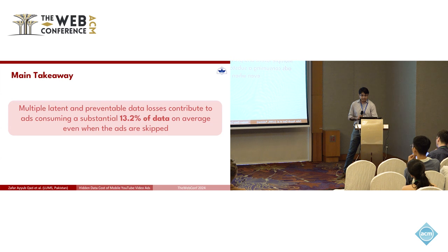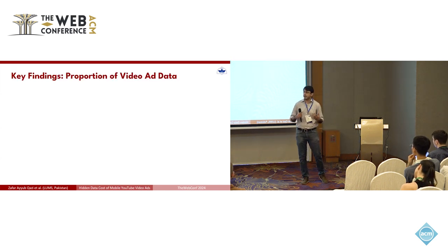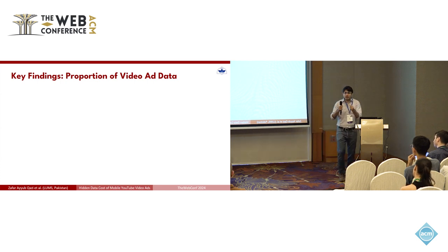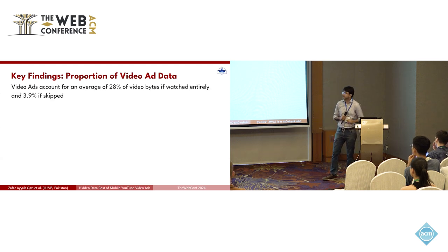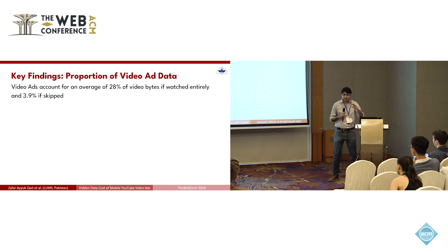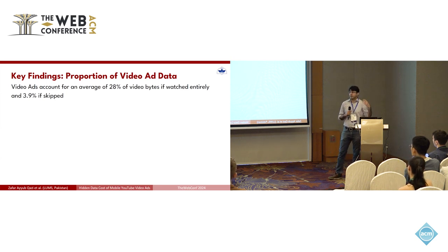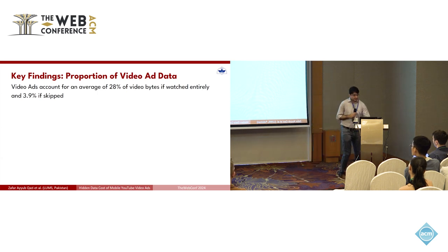We first looked at the proportion of data consumed by ads, focusing only on the amount of data directly associated with the ad and not taking into account any hidden losses. We discovered that video ads account for an average of 28% of video bytes if you watch the video entirely, and 3.9% if the ads are skipped — which is understandable, since YouTube allows you to skip ads after five seconds.